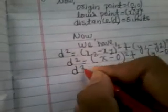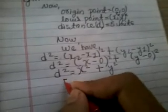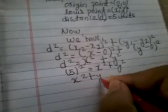This simplifies to x squared plus y squared, since x minus zero equals x and y minus zero equals y. Substituting the distance value, 5 squared equals x squared plus y squared, which gives 25 equals x squared plus y squared. Rearranging, the equation of the locus is x² + y² − 25 = 0.